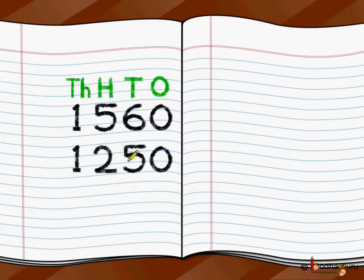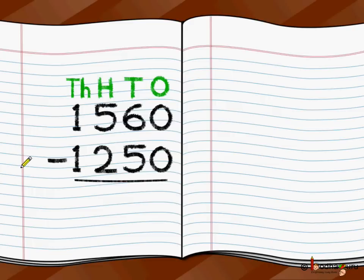How many trees did this cruel witch cut? 1250. We write the second number — how many trees were removed — in the correct way with their right place values. So 1 at the thousand place, 2 at the hundredth place, 5 at the tens place, and 0. Ensure you write both numbers correctly in their correct place value positions.